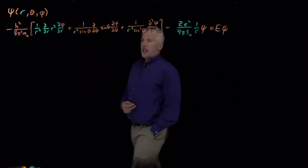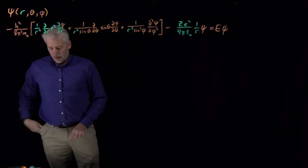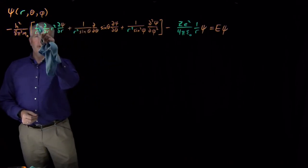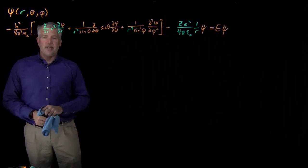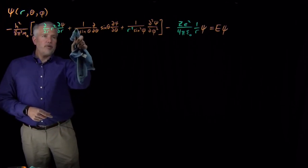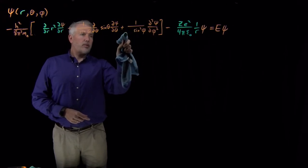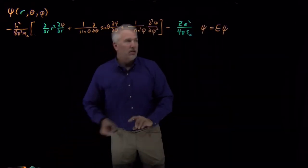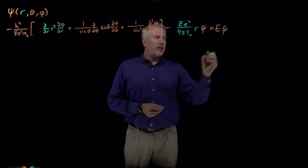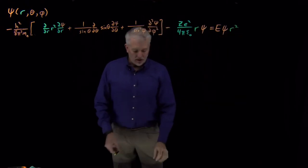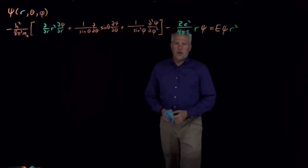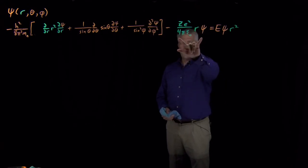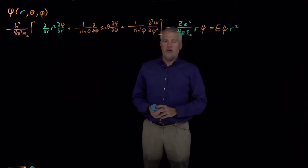The first step: r² shows up in nearly every term, so we multiply through on both sides by r². That removes the 1/r² factors and converts the 1/r potential term into r. We also multiply the right side by r². The equation already looks a bit better — it almost looks like we've separated it into purely radial terms and purely angular terms.